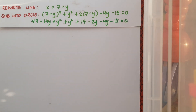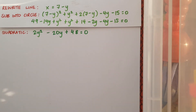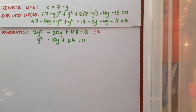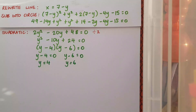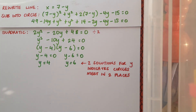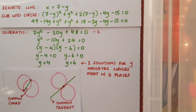It does indeed give a quadratic: 2y² - 20y + 48 = 0. I can make life easier by dividing through by 2, giving y² - 10y + 24 = 0. Factorising gives (y - 4)(y - 6) = 0, so y = 4 and y = 6. It's interesting to note that these two solutions for y indicate the circles meet in two places - so only at this stage do I know I have a common chord rather than a common tangent. If it were a common tangent, I would expect only one repeating value of y.